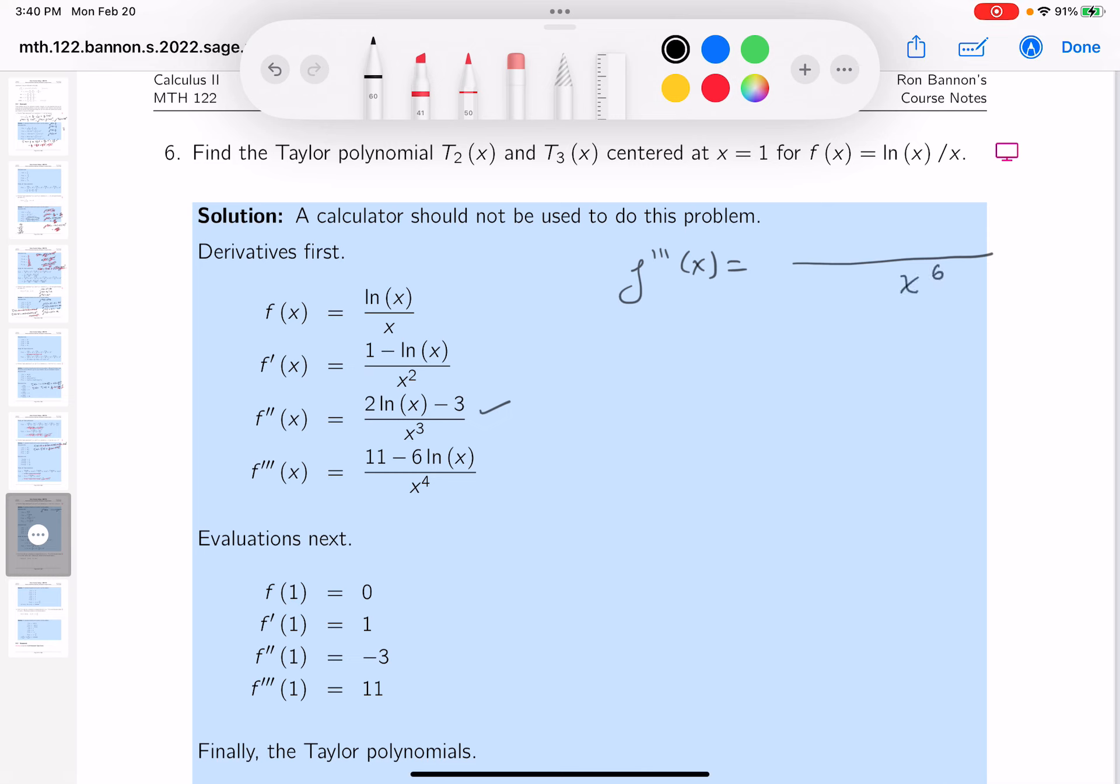So, it's going to be x to the 6, and then x cubed times the derivative of the top, which is simply 2 over x, minus the top, which is 2 ln x minus 3, times the derivative of the bottom, which is 3x squared.